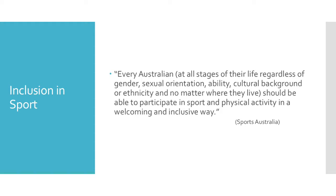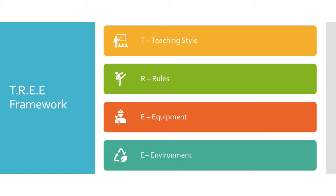Every Australian should be able to participate in sport and physical activity in a welcoming and inclusive way. This can be implemented through the TREE framework model, which stands for Teaching style, Rules, Equipment, and Environment. This video will demonstrate with examples how the TREE model can be implemented.